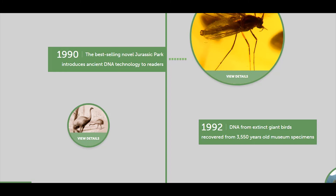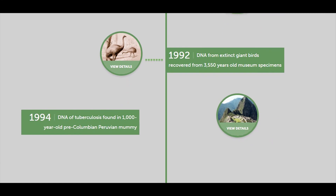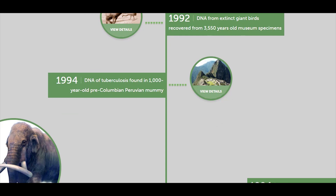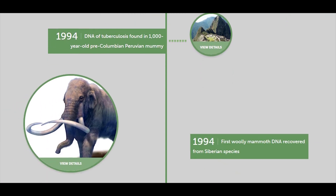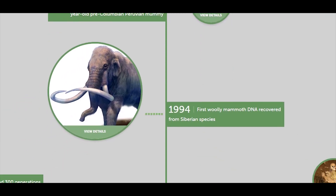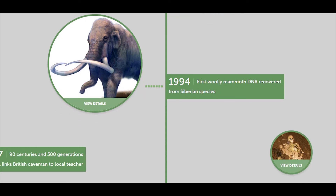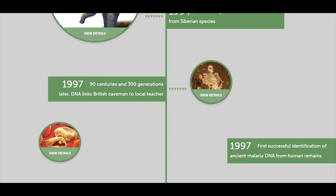In 1990, the best-selling novel Jurassic Park introduced ancient DNA technology to readers. In 1992, DNA from extinct giant birds was recovered from 3,550-year-old museum specimens. In 1994, DNA of tuberculosis was found in 1,000-year-old pre-Columbian Peruvian mummies. Also in 1994, the first early mammoth DNA was recovered from Siberian species. In 1997, nine centuries and 300 generations later, DNA linked ancient British to a local teacher.